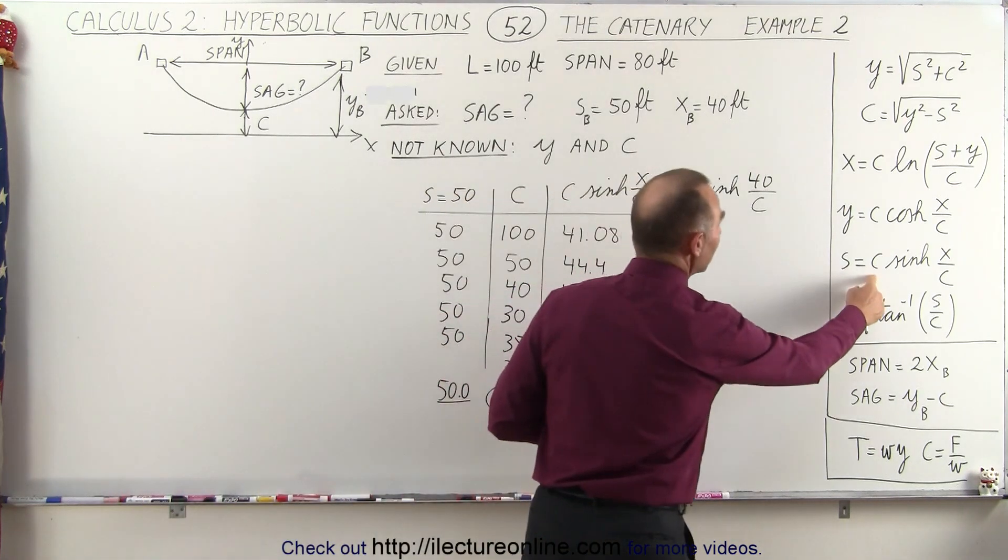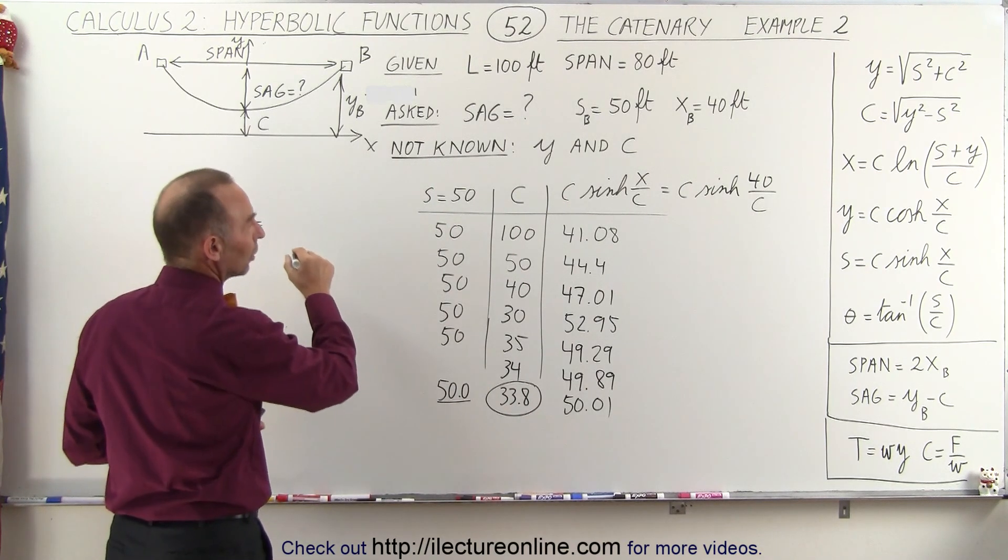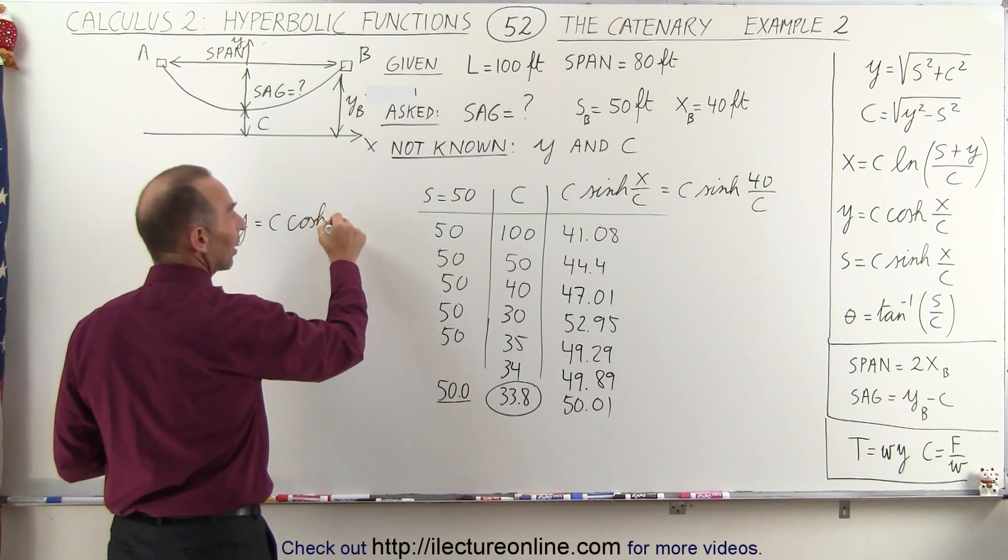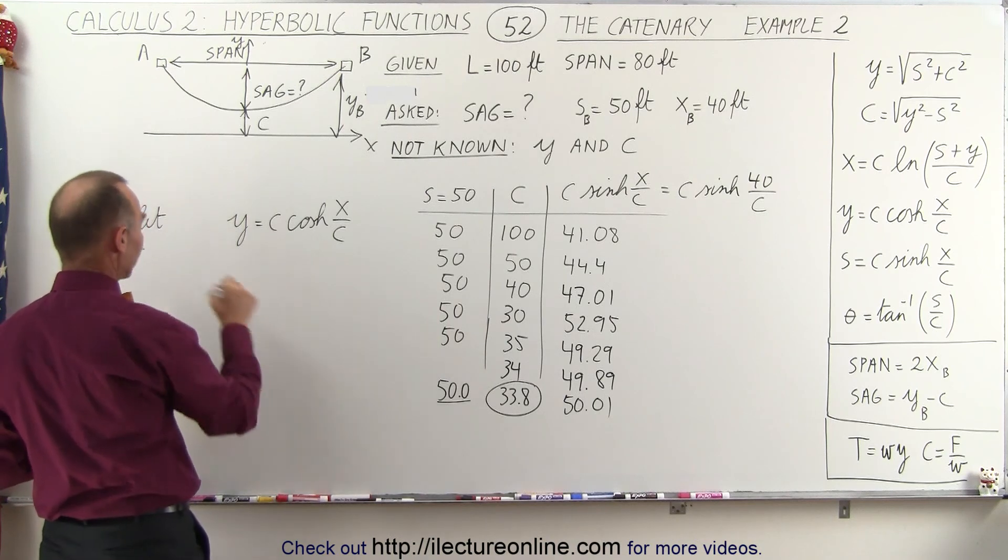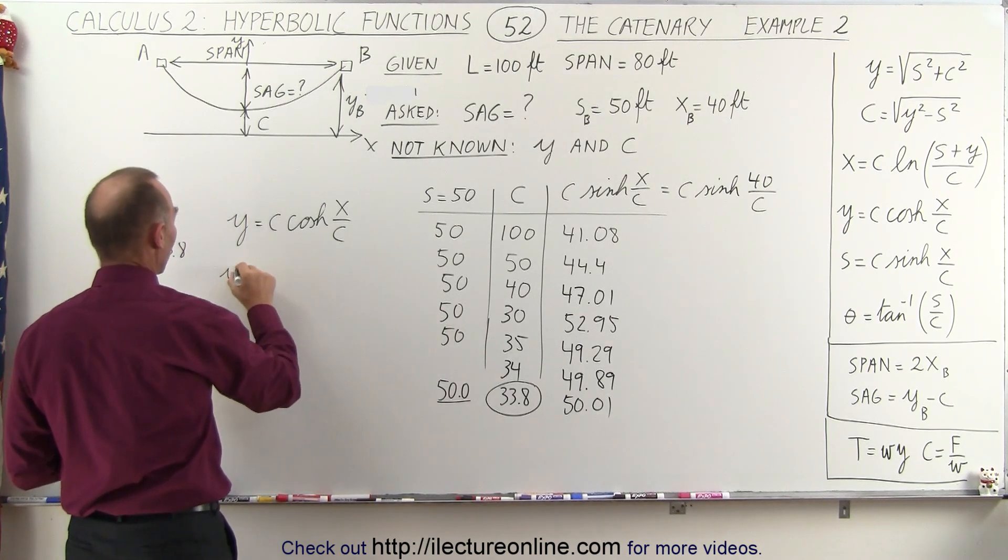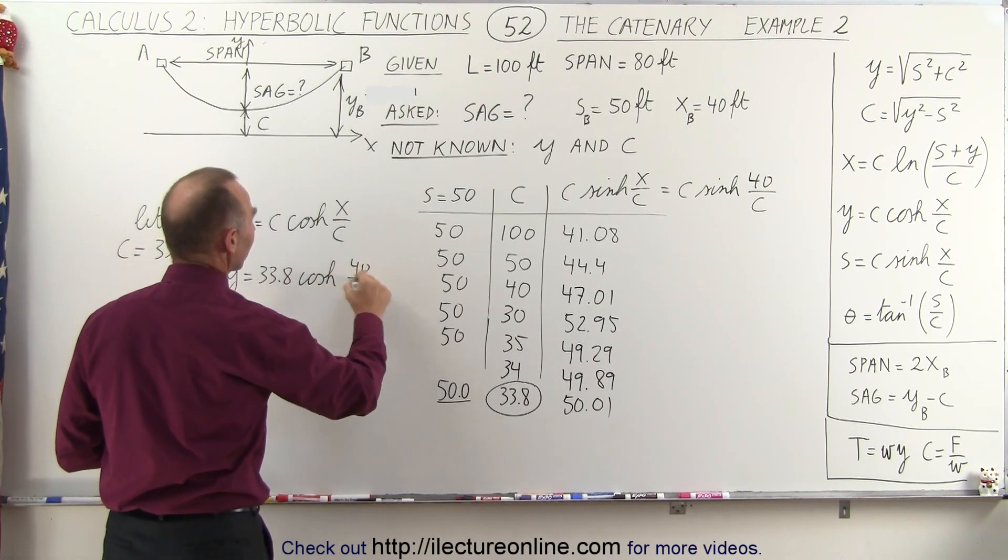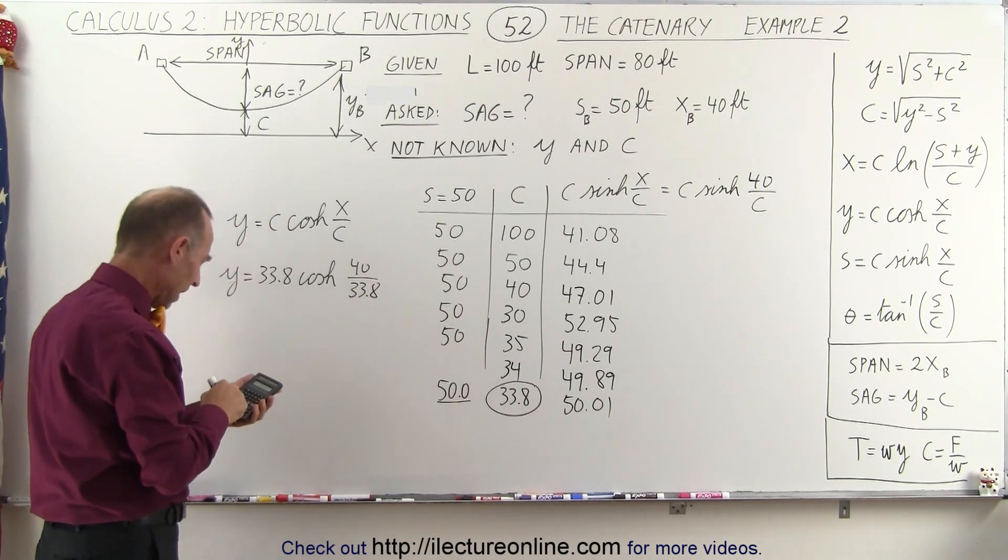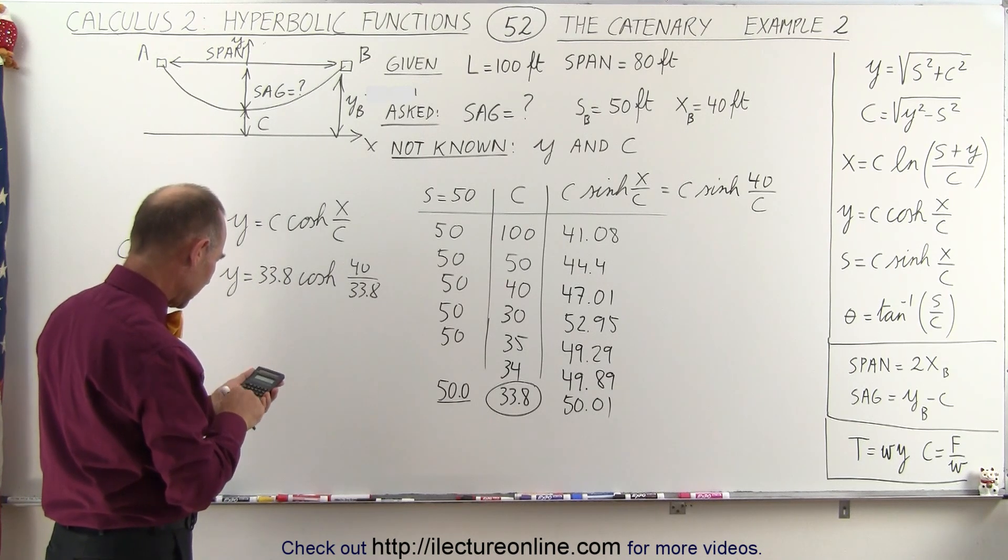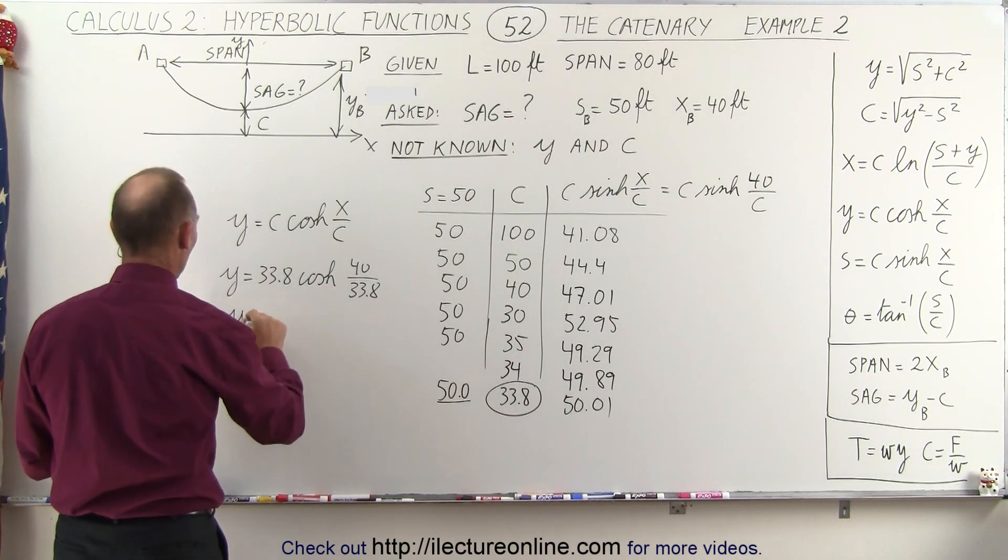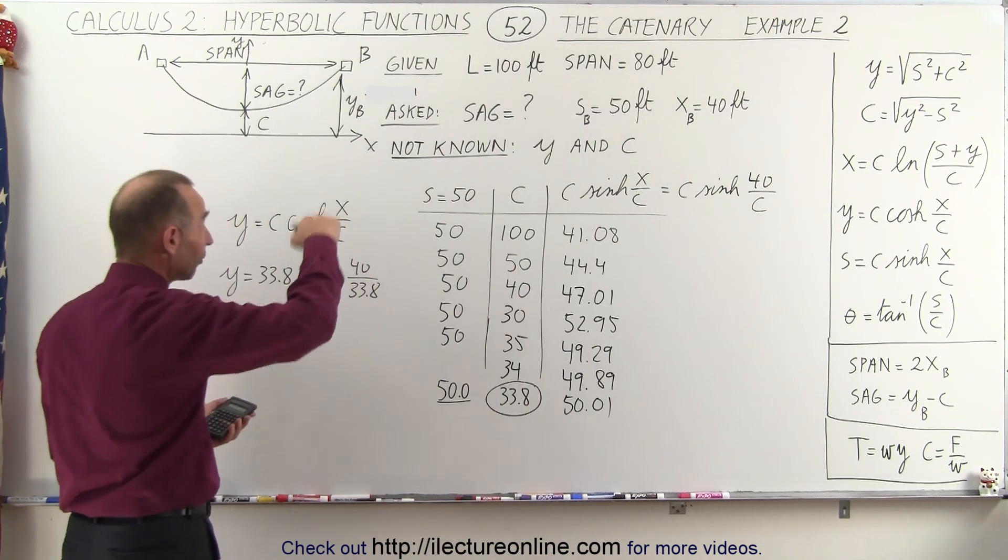So now that we have the value for c now we can find the value for y because we know that y is equal to c times the hyperbolic cosine of x over c. We're going to let c equal the value that we found 33.8 and so y is equal to 33.8 times the hyperbolic cosine of 40 divided by 33.8 and let's see what we get. 40 divided by 33.8 take the hyperbolic cosine and multiply times 33.8 and I get 60.36. So y is equal to 60.36 and this is indeed y at b. That's the full height.